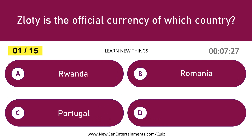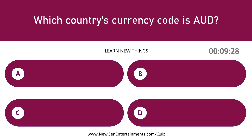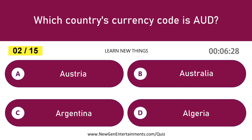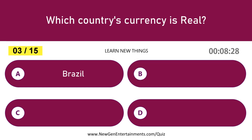ZLOTY is the official currency of which country? Poland. Which country's currency code is AUD? Australia. Which country's currency is real? Brazil.